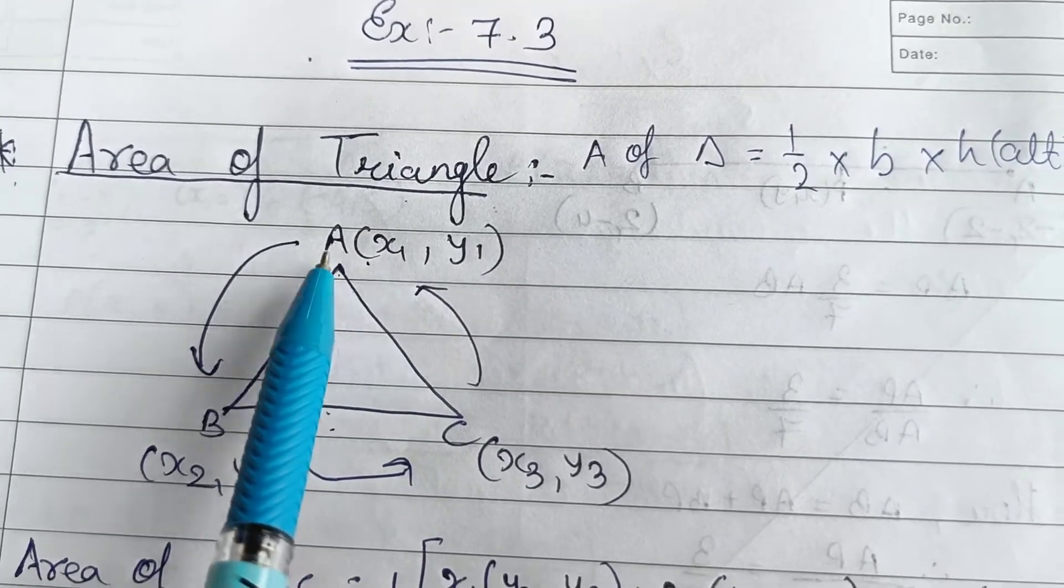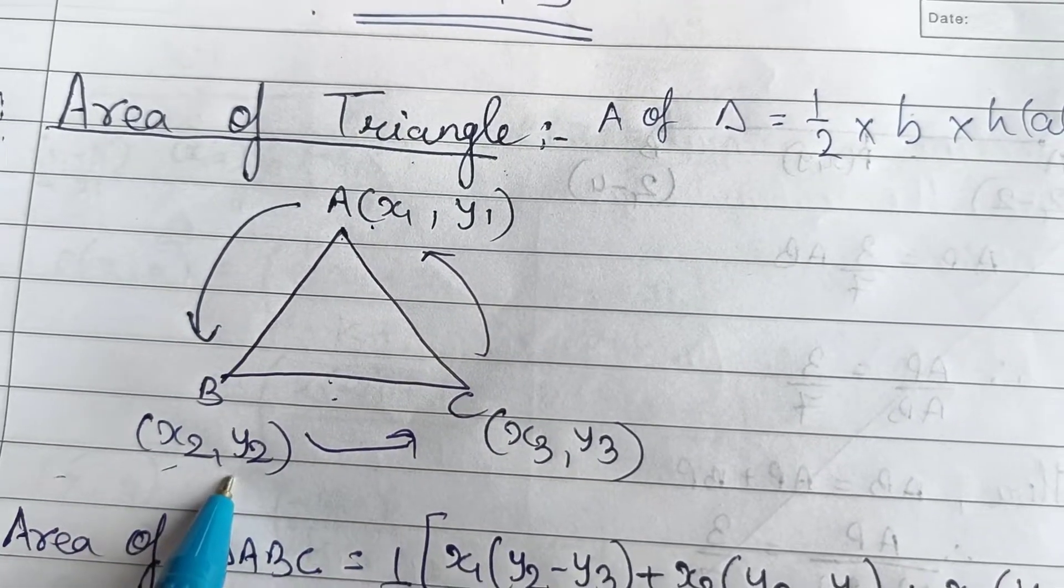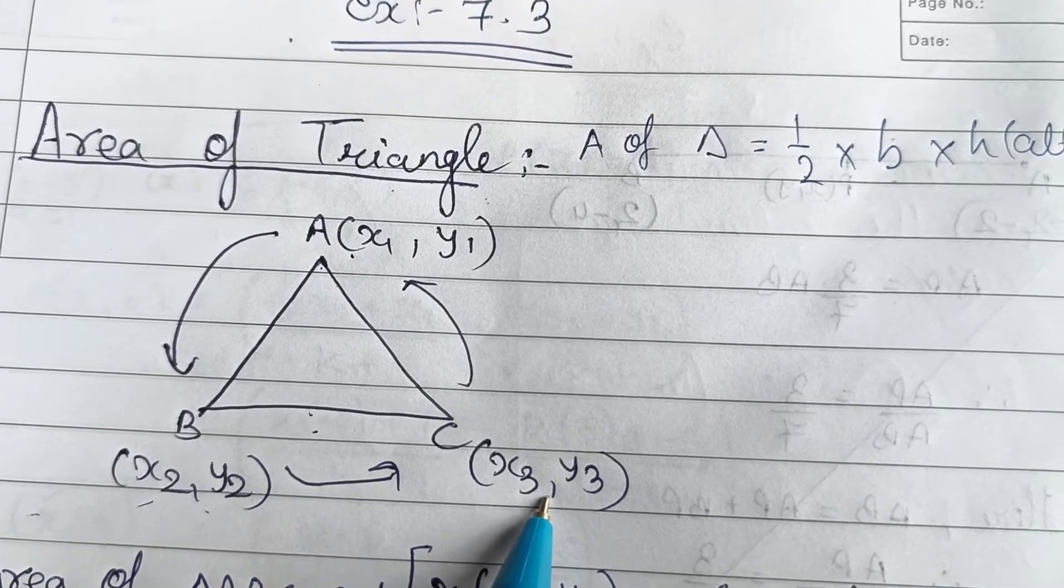So this is your coordinate. First vertices is x1, y1. Second vertices is x2, y2. And third vertices is x3, y3.